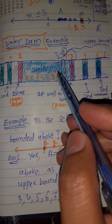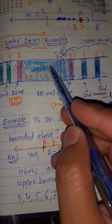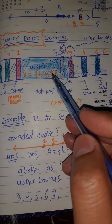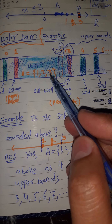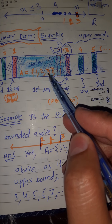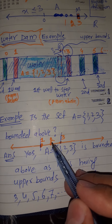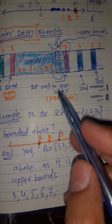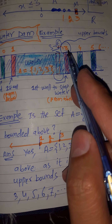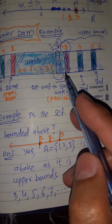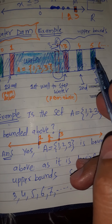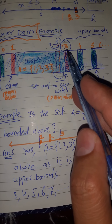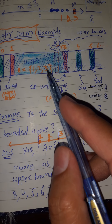Now assume that this water represents the set A = {1, 2, 3} and the water represents the elements of this set. The first wall is three — we know the set is not going beyond three from above. Three is the first wall to stop this set, to stop this water. So three represents the red wall. The upper bounds of this set are four, five, six, but three is the least of the upper bounds, so the supremum of this set is three.